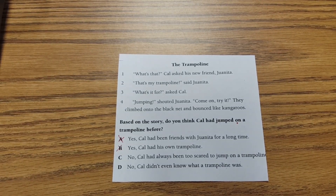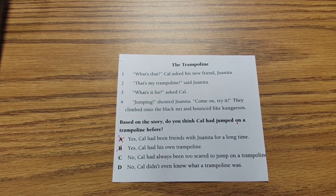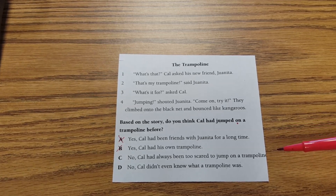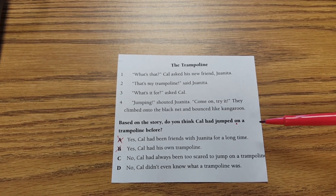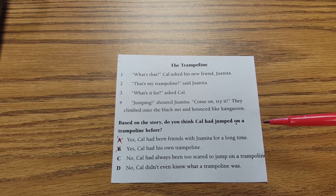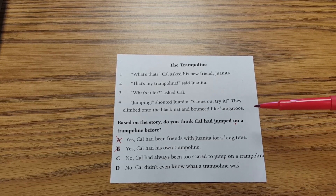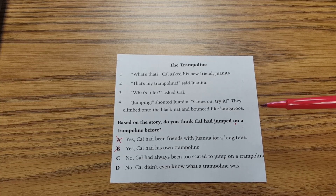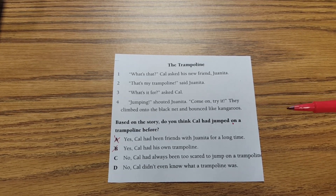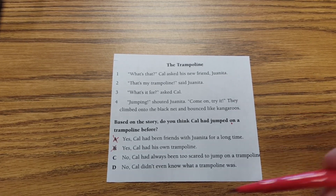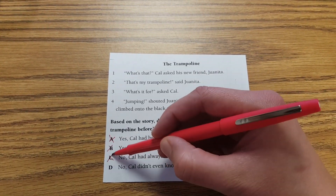Answer C: No, Cal had always been too scared to jump on the trampoline. Again, this answer does not answer the question that was asked — whether Cal had jumped on a trampoline before. Also, in line four it says that they climbed onto the black net and bounced like kangaroos. That sounds like they had a great time and were not scared to jump on the trampoline at all. So that is not a good answer.